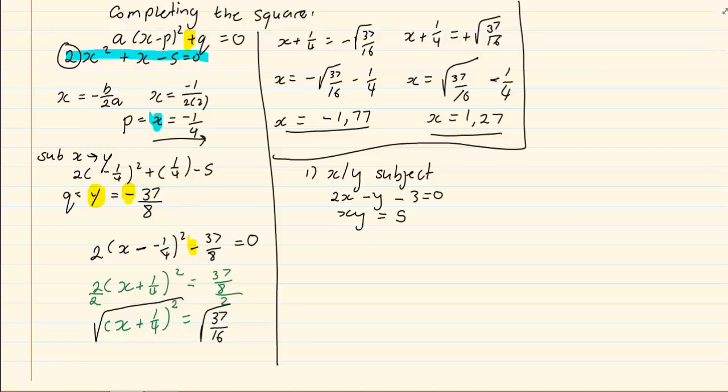if we work with the xy is equal to 5, even though it looks like it is easier, you would end up with 5 over x which is a fraction. Now, to choose a fraction over a linear equation is making your work harder for you.